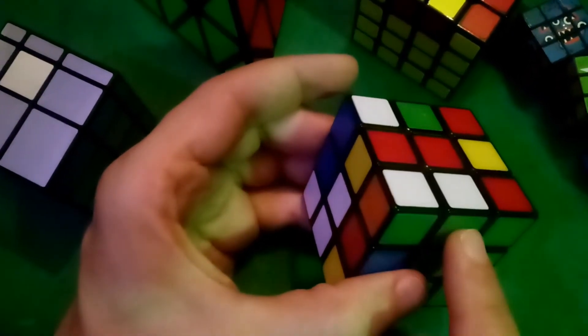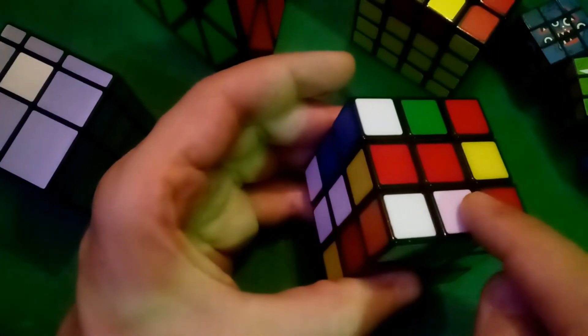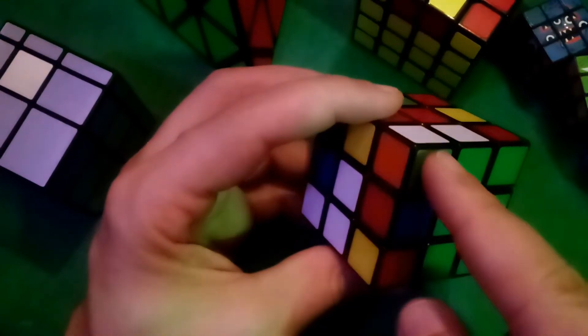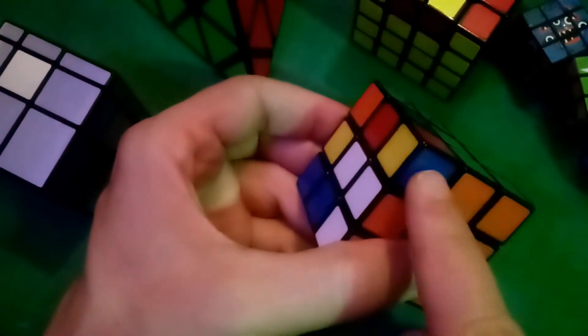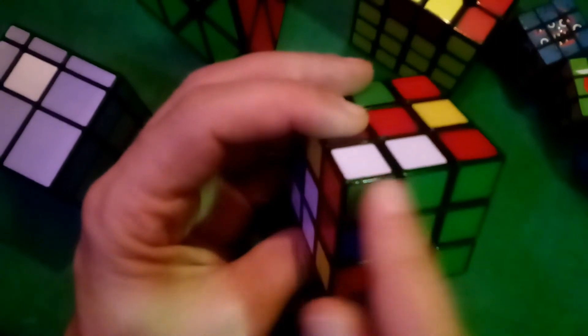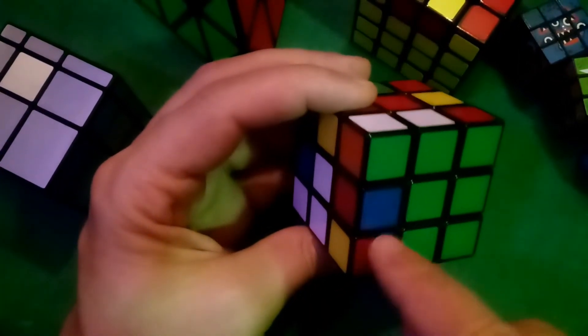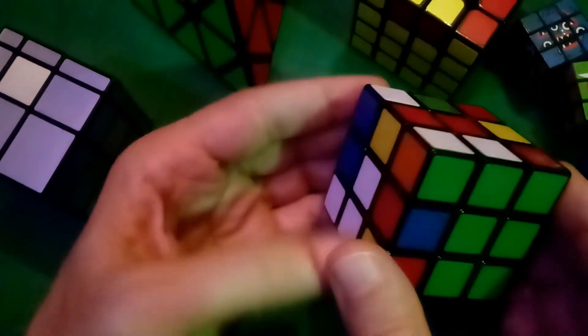This green is next to a green, and this white is next to a white, so that when this orange guy goes back down to this orange side, this green white is going to go with him, and it will be perfectly placed. So, let's do that.